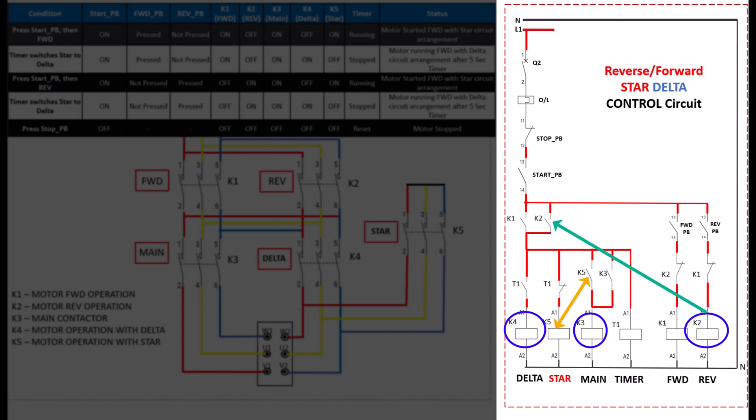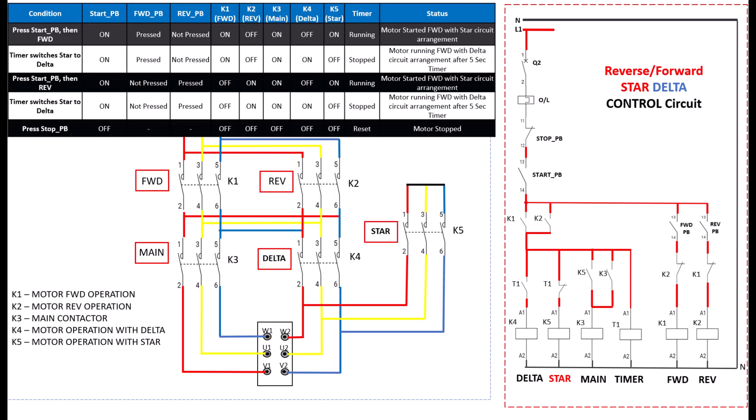You also see that K3 main contactor will not energize until K5 star contactor engages. This is also an interlock or condition. The purpose is to engage both the K3 main contactor and K5 star contactor together.